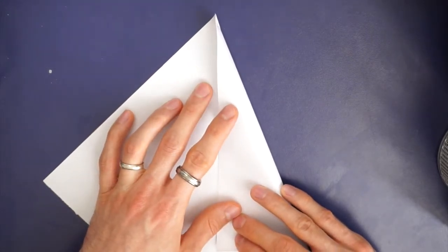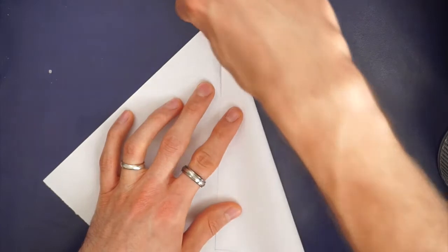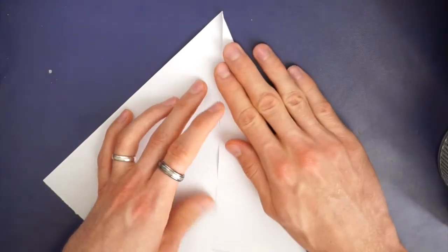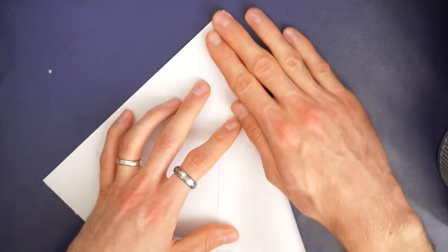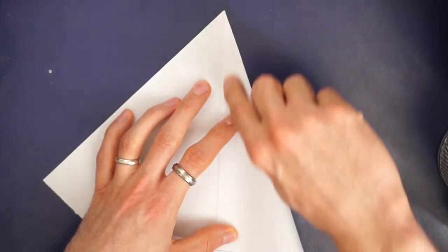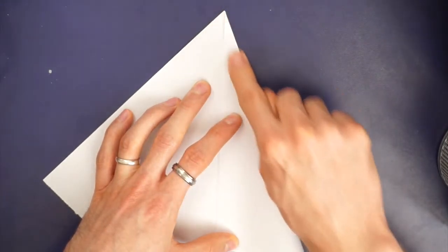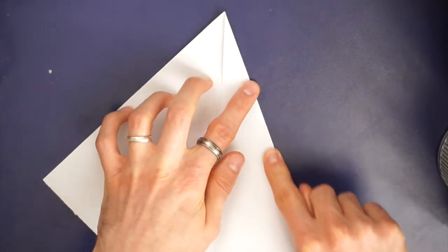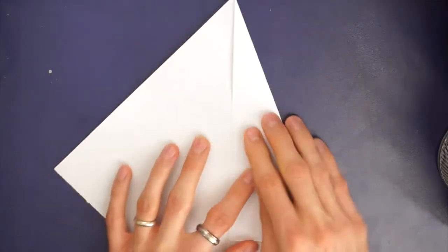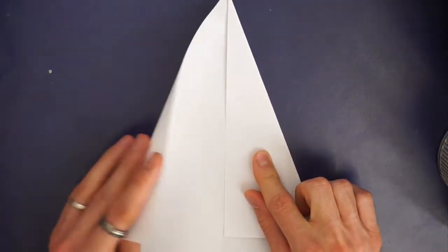Now this is unusual we don't normally fold like this but it's a bit like you're making a paper airplane. So you want to fold like that with this line running down that middle line and do the same again on the other side.